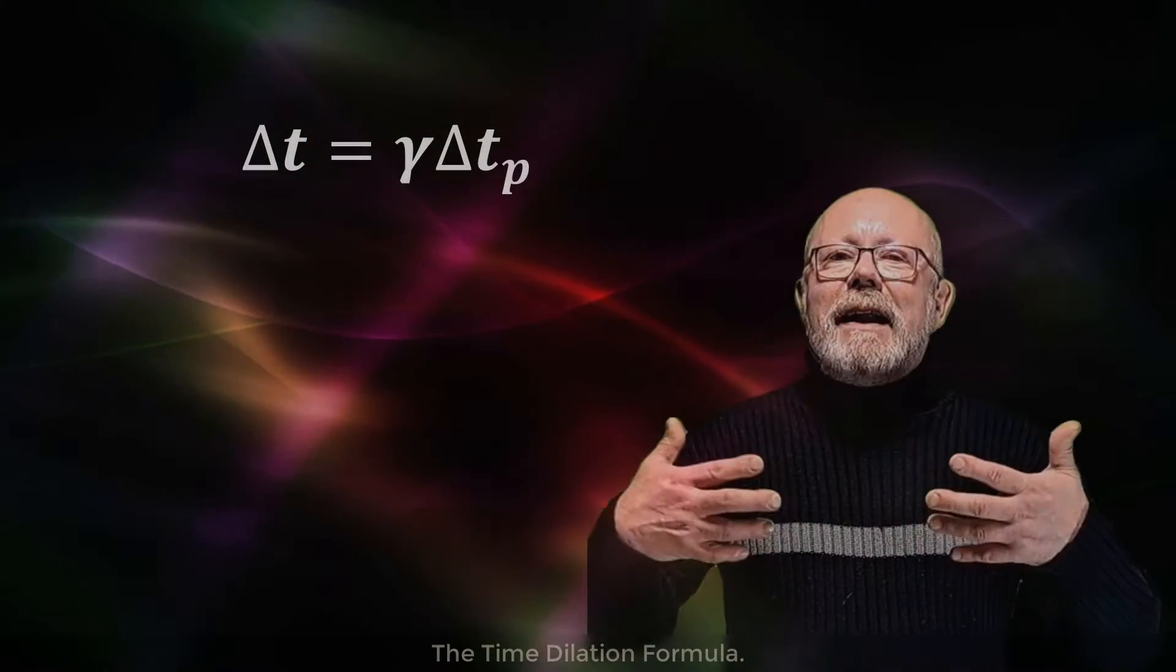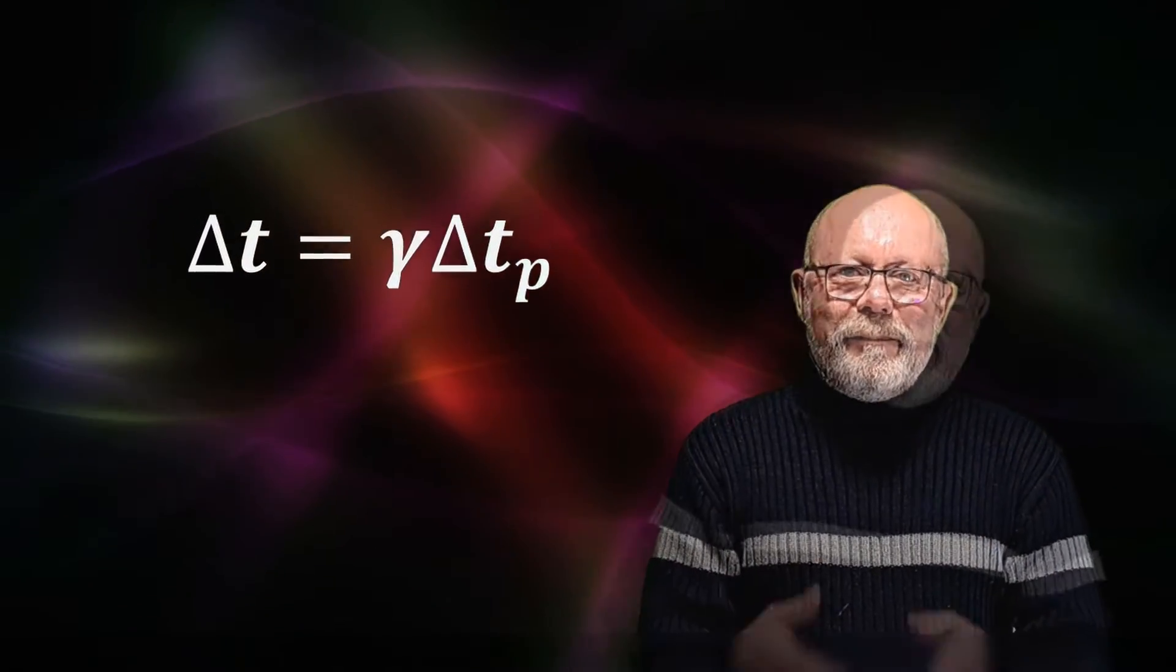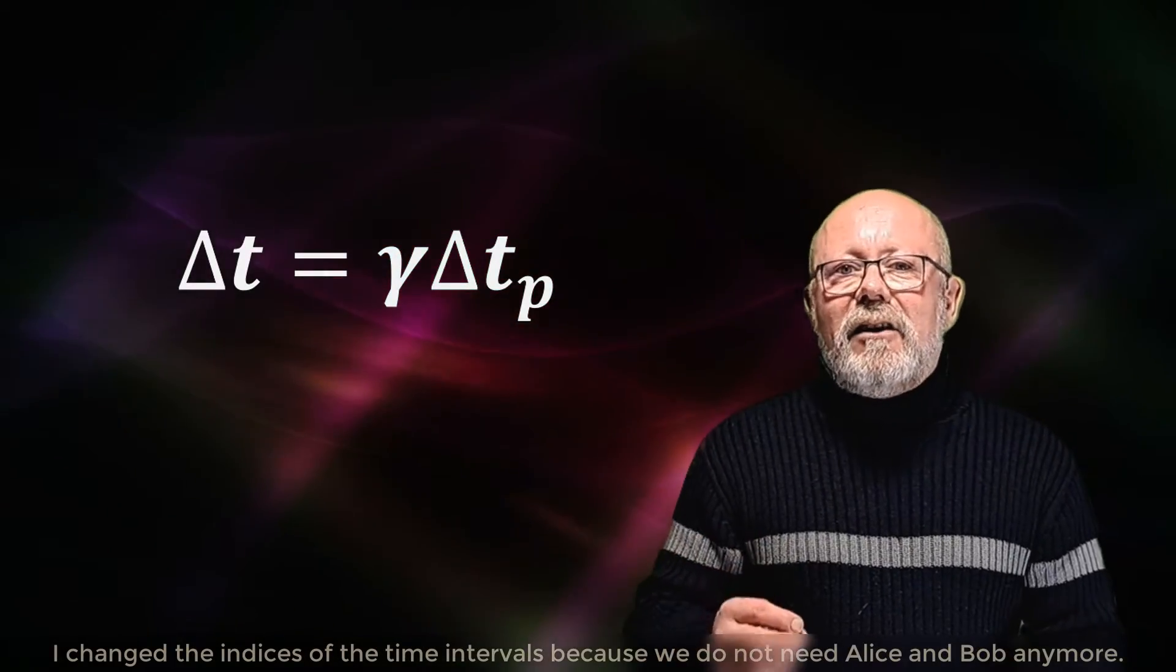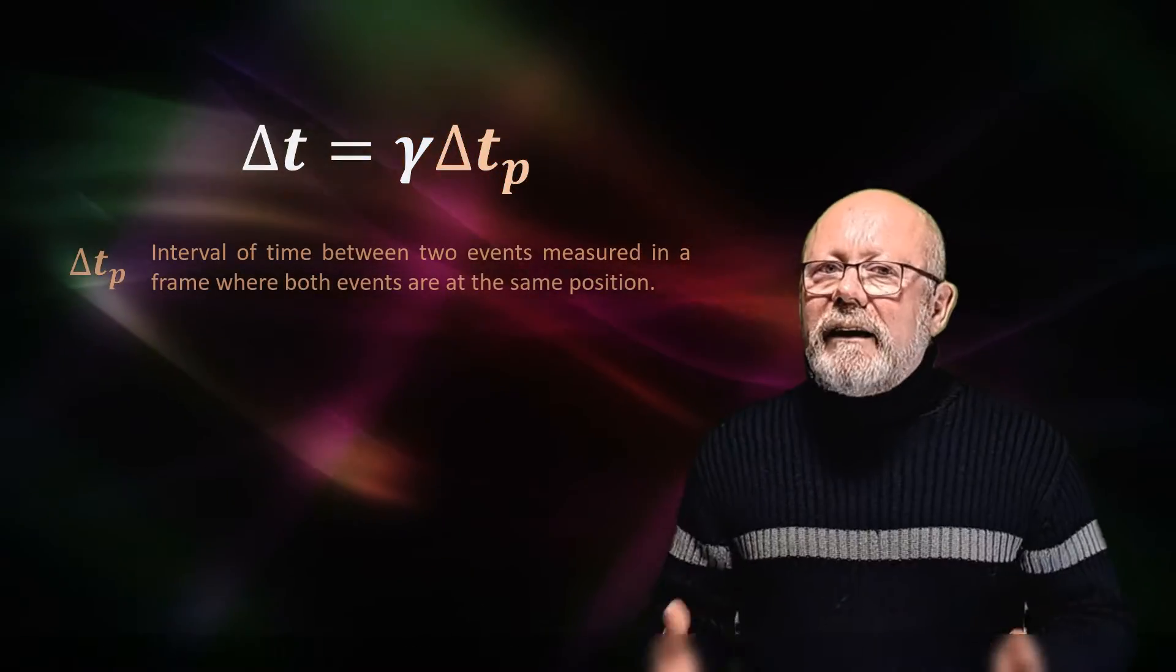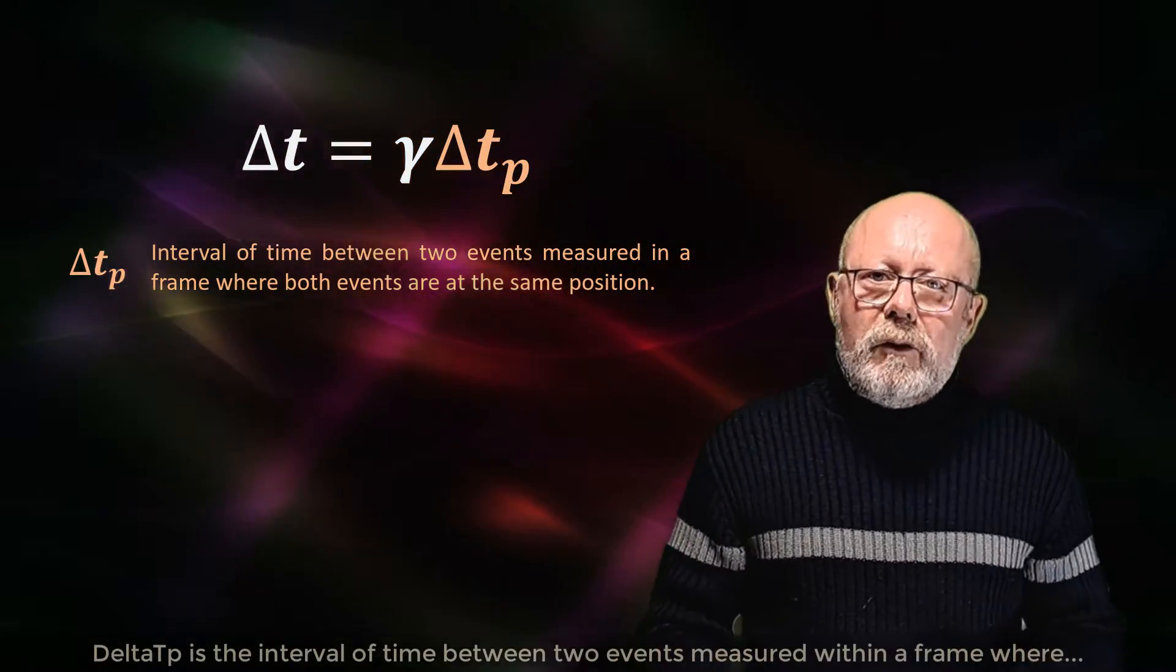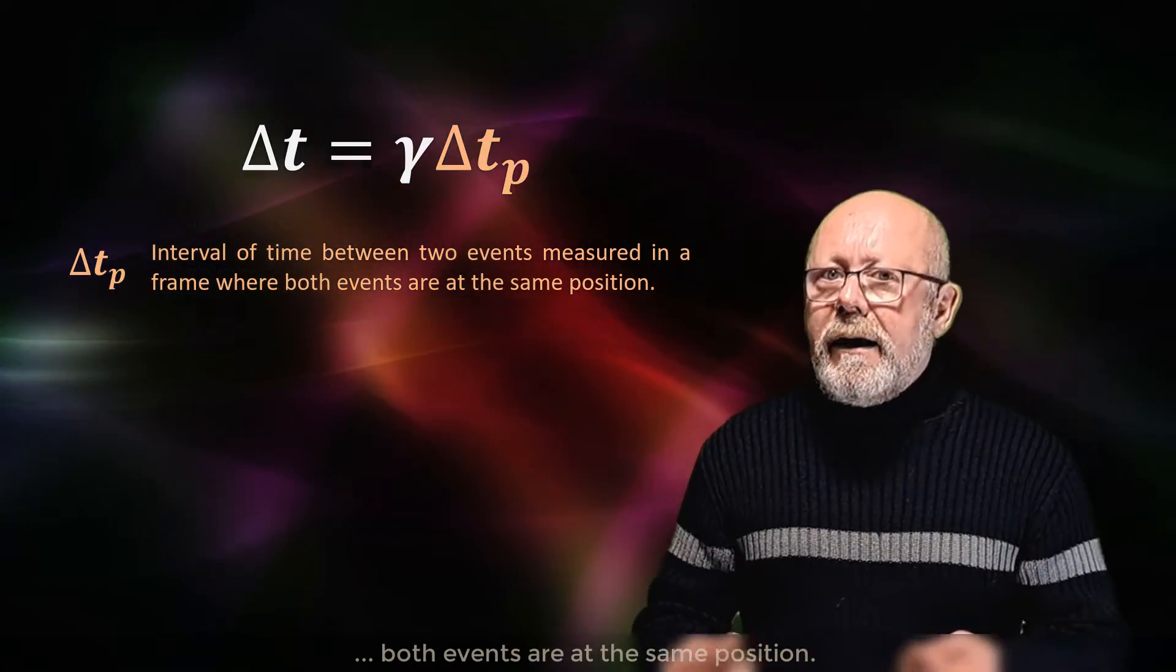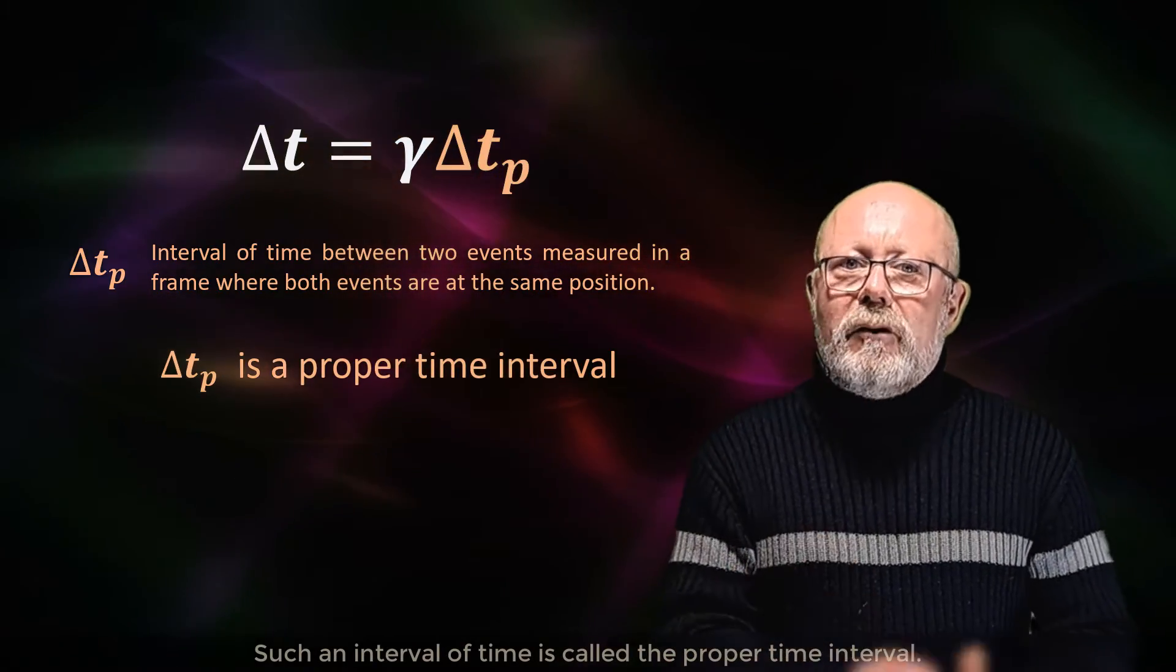The time dilation formula. Here it is in all of its splendour. Delta t equals gamma delta t_p. I changed the indices of the time intervals, because we do not need Alice and Bob anymore. Delta t_p is the interval of time between two events measured within a frame, where both events are at the same position. Such an interval of time is called the proper time interval.